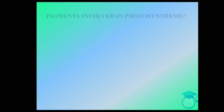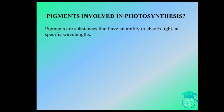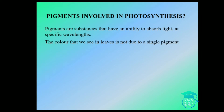What are the pigments involved in photosynthesis? A pigment is a substance that has the ability to absorb light at specific wavelengths. The color we see in leaves is not due to a single pigment but due to four pigments: chlorophyll a (bright blue-green), chlorophyll b (yellow-green), xanthophyll (yellow), and carotenoids (yellow to yellowish-orange).